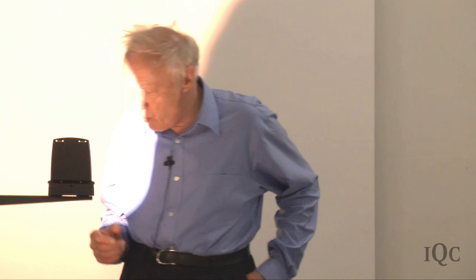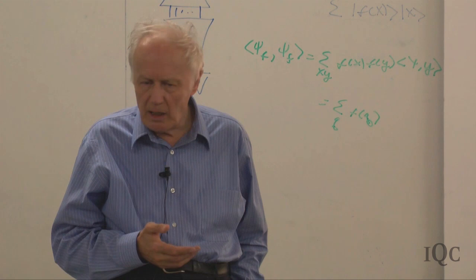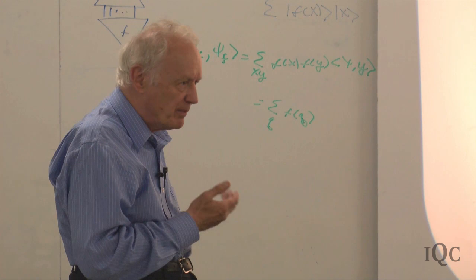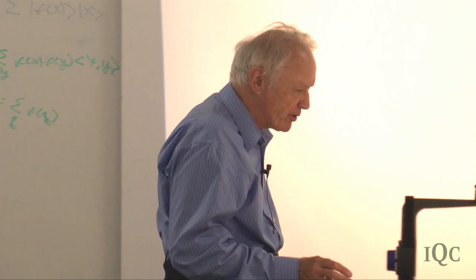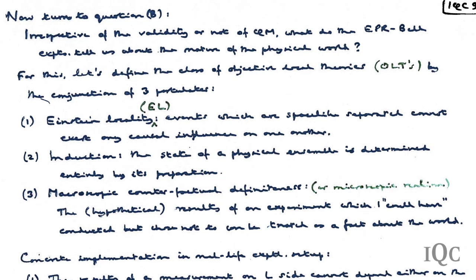That's really what I wanted to say about what Bell's theorem tells us about the structure of quantum mechanics, and I suspect most of you are already pretty familiar with this in perhaps slightly different language. Now let's turn to question B: irrespective of the validity or not of quantum mechanics, what do the EPR-Bell type experiments tell us about the nature of the physical world? For this purpose, let's return to the CHSH theory but in somewhat more generic language, and define the class of objective local theories rather generally as a conjunction of three postulates.